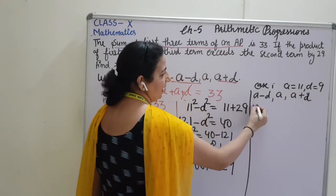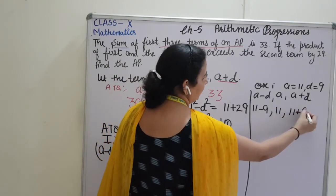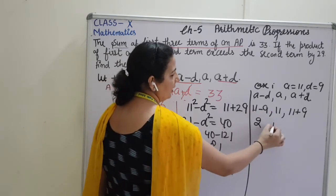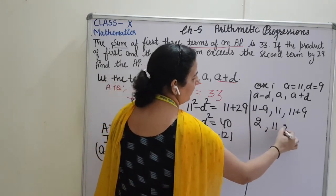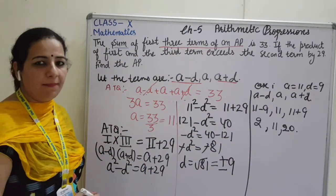11 minus 9 is 2, then 11, then it will be 20. So, this will be the first three terms of an AP.